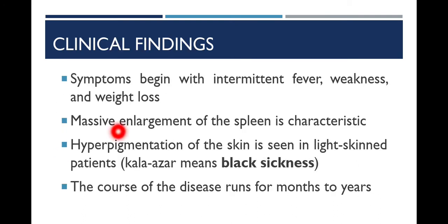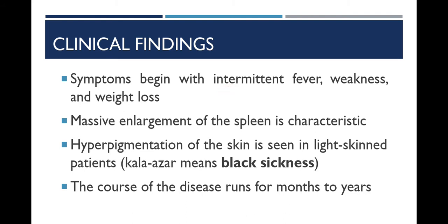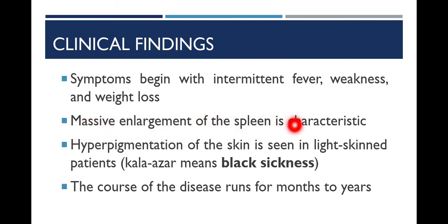Symptoms begin with intermittent fever, weakness, and weight loss. Intermittent fever is a fever with episodes of elevated temperature that goes down to normal and then rises again. This pattern of fever is known as intermittent fever. Weakness and weight loss are the initial symptoms of visceral leishmaniasis. Massive enlargement of the spleen is a characteristic feature of visceral leishmaniasis.